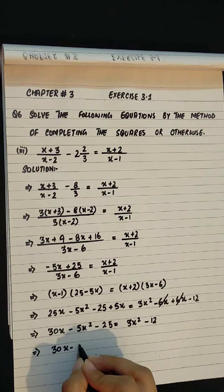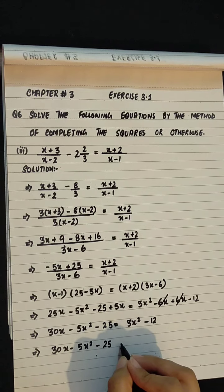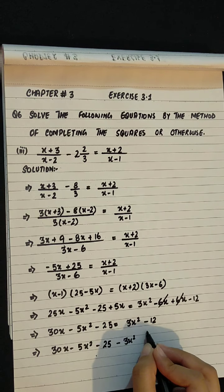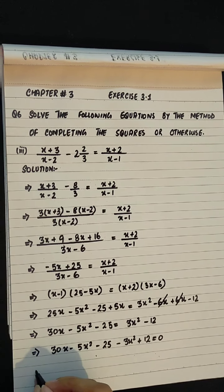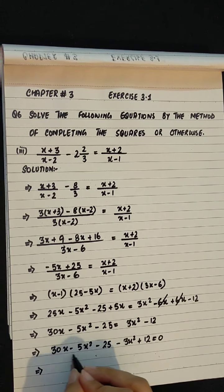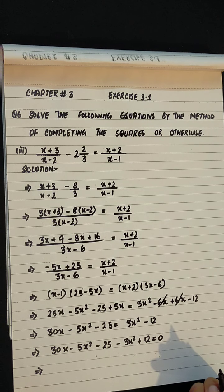30x minus 5x square minus 25. Minus 6x. Minus 25. Minus 3x.